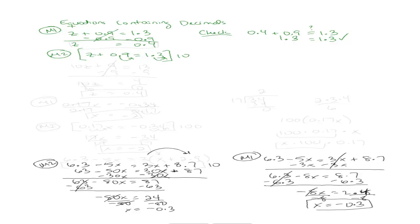So 10 times z is going to give me 10z. 10 times 0.9 is going to give me 9, and 10 times 1.3 is going to give me 13. Once I'm here, I'm just going to solve the equation as usual. So subtract 9 from both sides, and I get 10z equals 13 minus 9, which is 4. And then divide both sides by 10. And here I have division by 10, so any number divided by 10, I'm just going to move the decimal to the left one. So that's going to give me 0.4.